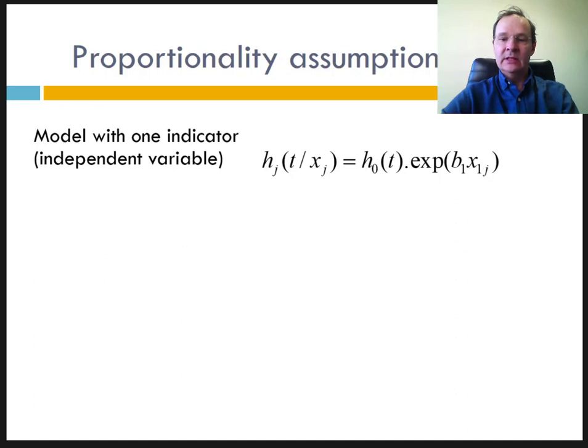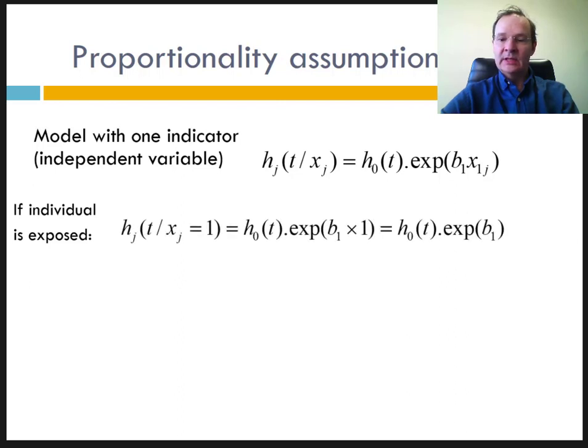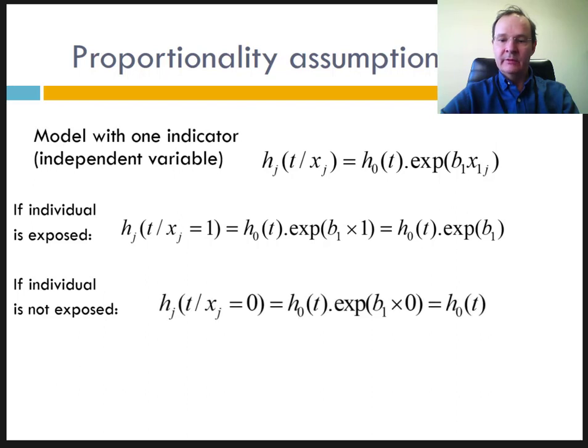Let us see two possible cases. Either the individual is exposed or he is not. For example, either he is a man or he is not. If the individual is exposed, then x1 is equal to 1 and the model is written h0(t) multiplied by exponential of b1. If the individual is not exposed, then x1 is 0 and the expression is reduced to h0(t).